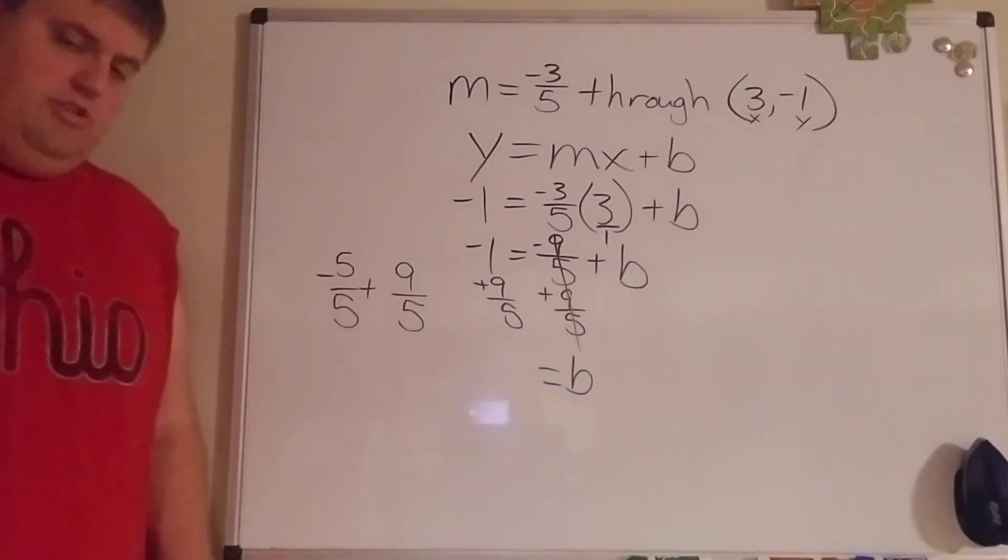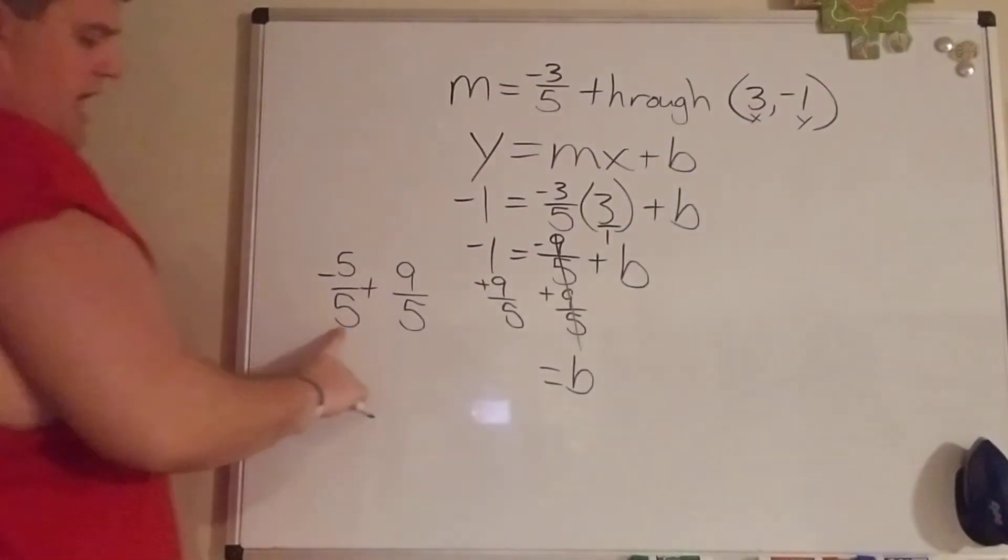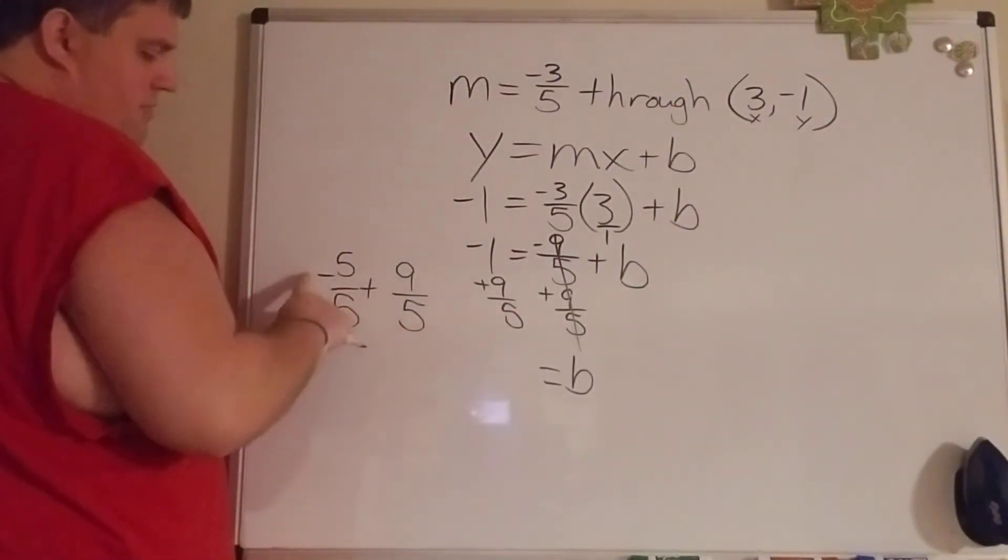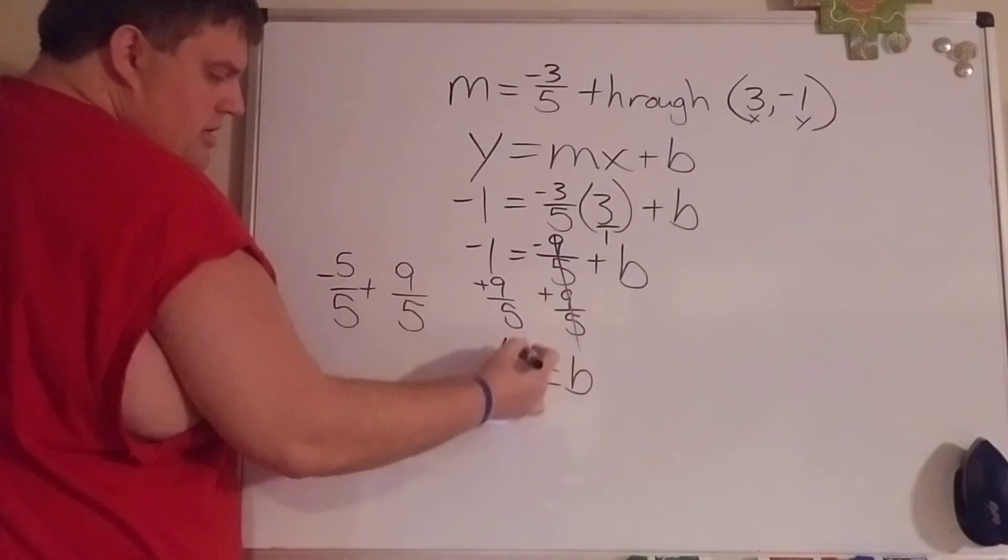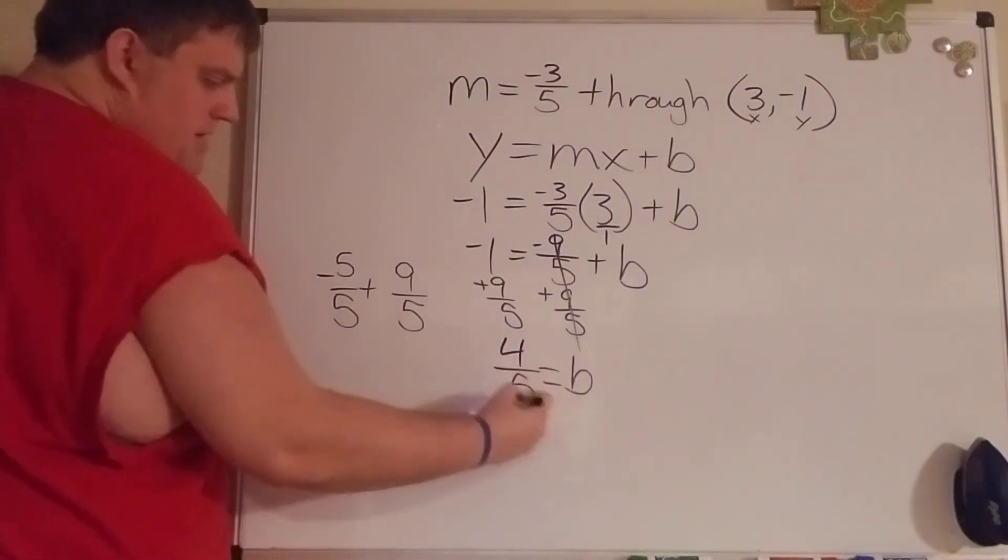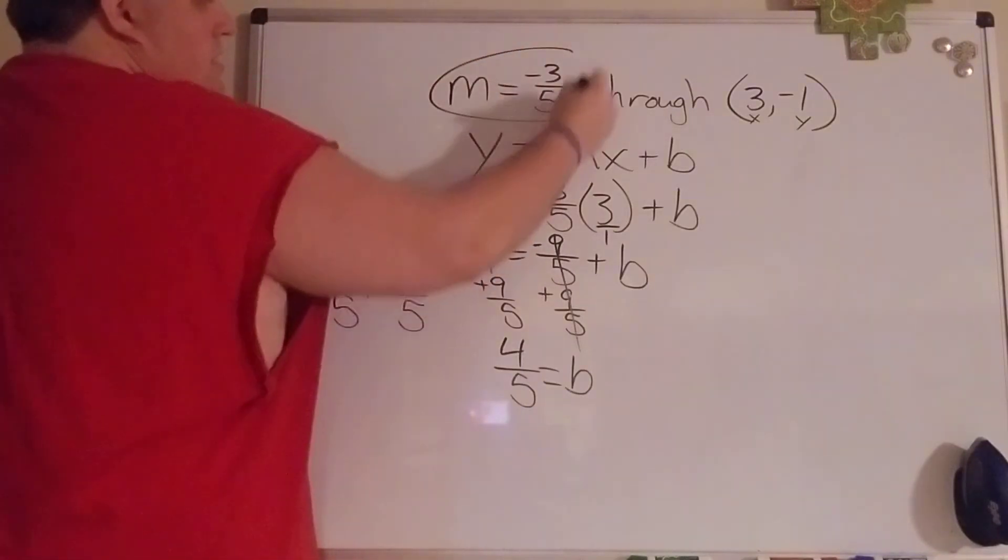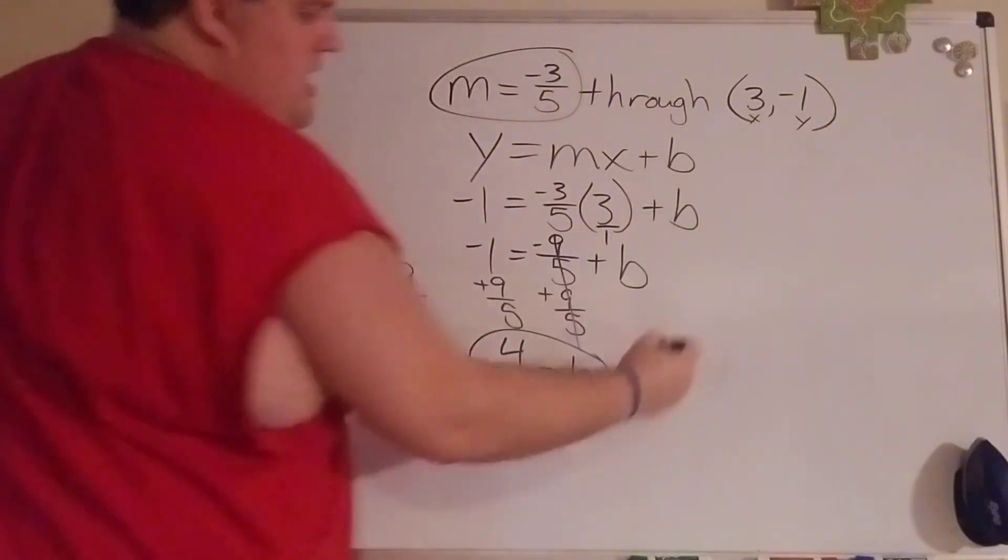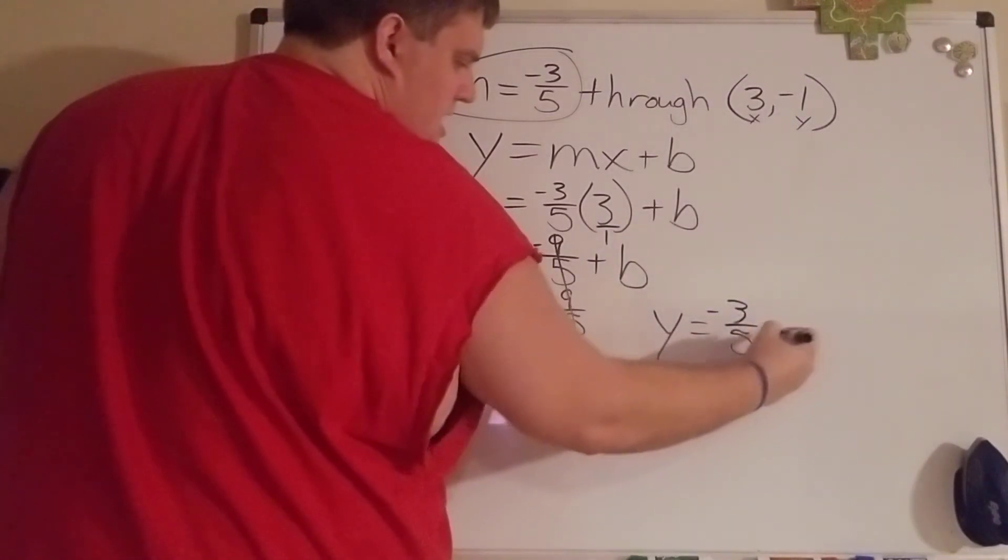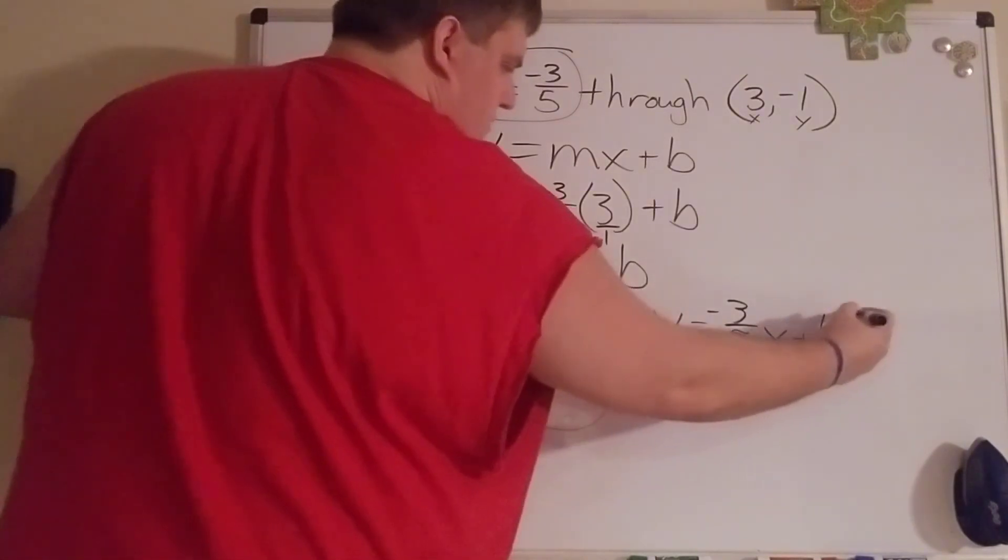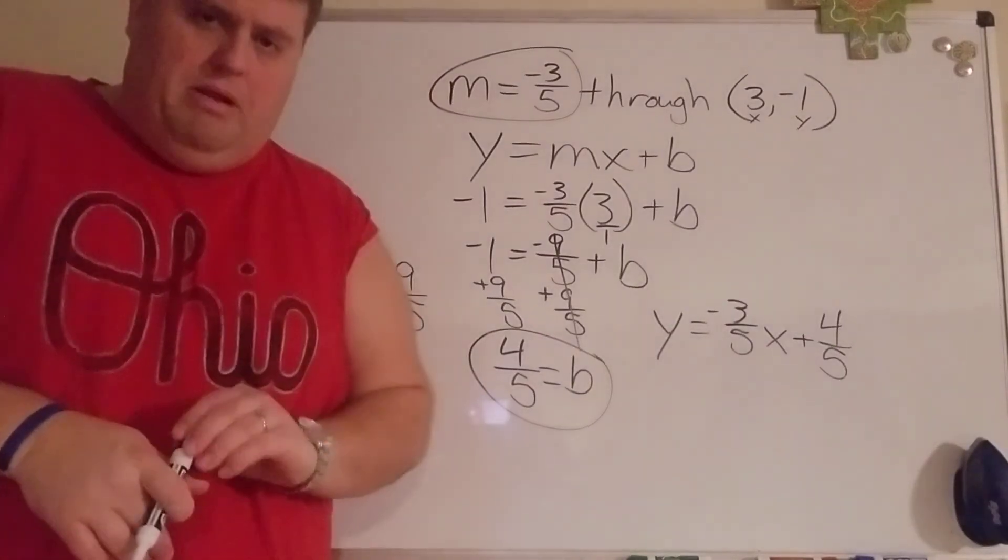We're going to keep the denominator, we add the numerators. Negative five plus nine is four and keep the denominator fifths. So now we got our slope right here, we got our y-intercept right here, and so this equation of the line is going to be y equals negative three-fifths x plus four-fifths.